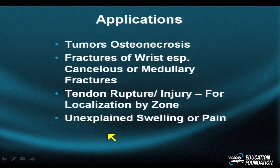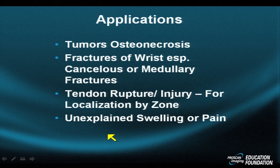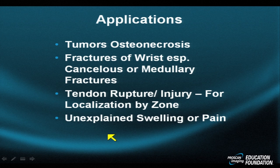Wrist fractures may seem straightforward — you do an x-ray and see the fracture — but more than fifty percent of all fractures sustained in the wrist have no cortical involvement. They are intramedullary, endosteal, cancellous bone fractures that don't show up on x-ray and hardly show up on CT. The most sensitive and accurate test, especially for the critical scaphoid bone, is a quick T1 fat-weighted and heavily water-weighted MRI.